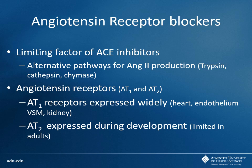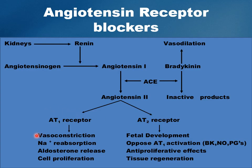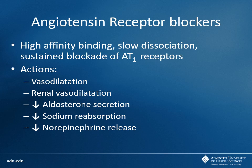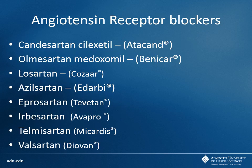ARBs primarily target the AT1 receptor, where most vasoconstrictive, sodium-retaining, and aldosterone-stimulating effects occur. AT2 receptors are more expressed in fetal development, which is why these drugs are also contraindicated in pregnancy. Blocking the AT1 receptor affects vasoconstriction, sodium reabsorption, aldosterone, cell proliferation, and hypertrophy — therapeutically, ARBs are interchangeable with ACE inhibitors. You can identify an ARB by the '-sartan' suffix: candesartan, olmesartan, azilsartan, eprosartan, irbesartan.